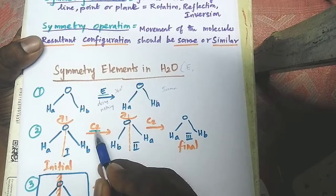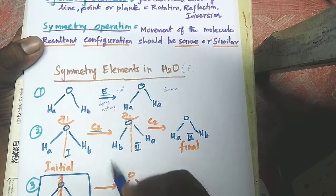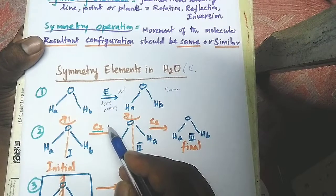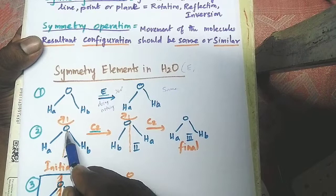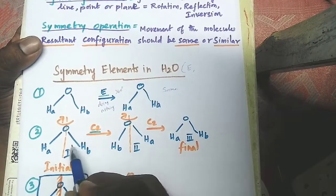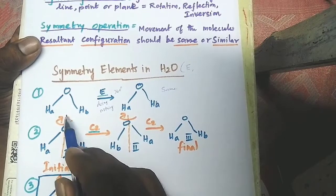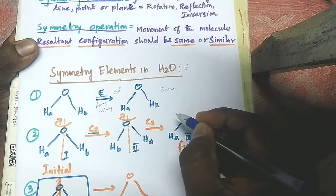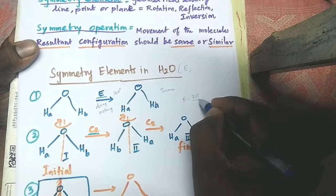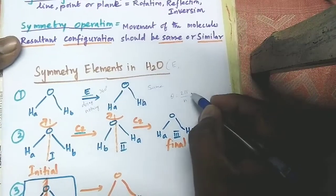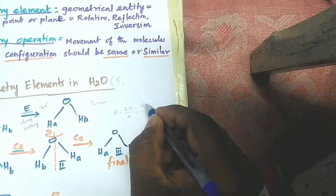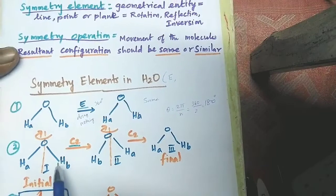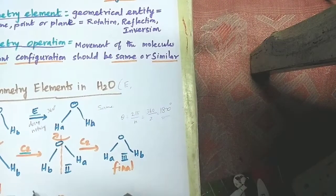Next, we should know what is C. C is the proper axis of symmetry. We are going to check what kind of proper axis of symmetry is possessed by the water molecule. Taking the water molecule — oxygen, hydrogen, hydrogen — this is the initial configuration. We consider the vertical axis as the principal axis and apply the C2 operation. Here, theta equals 2π/N, so 360 divided by 2 gives us 180 degrees. So we are going to do a 180 degree rotation to check whether C2 is present.